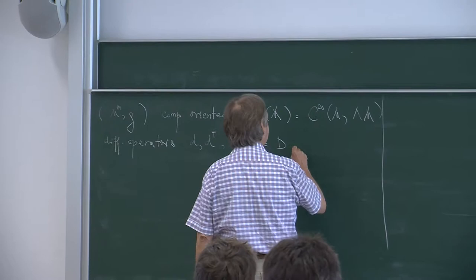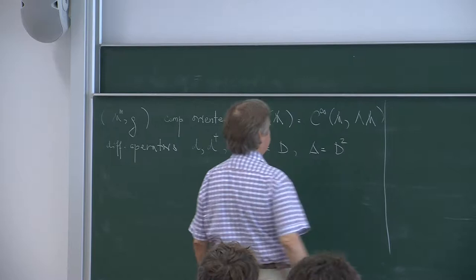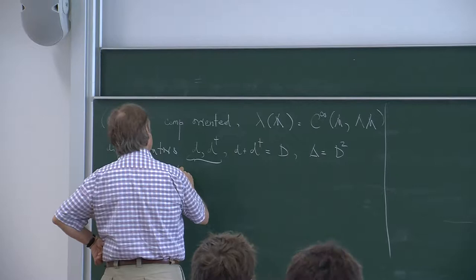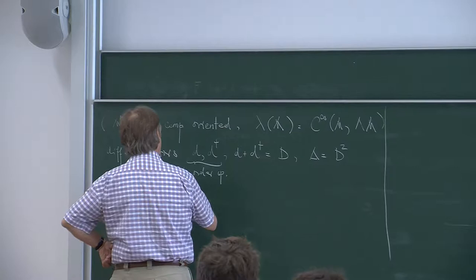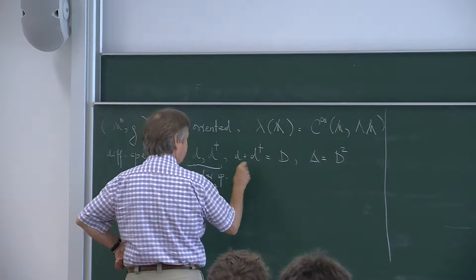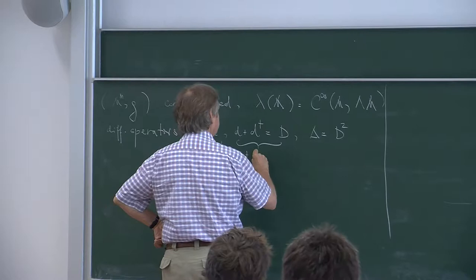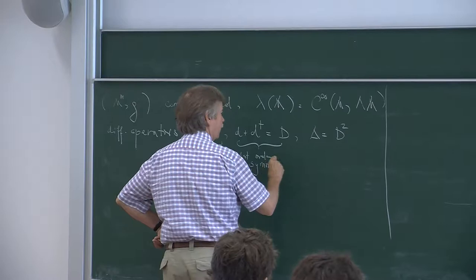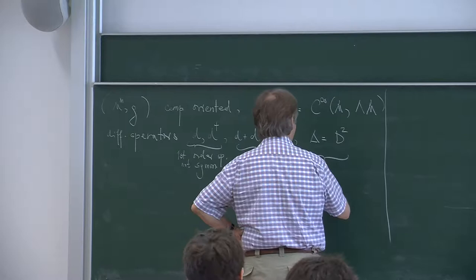It was a slightly different operator. And finally, the Laplacian. So D and D dagger are first-order operators and they are not symmetric. The de Rham–Hodge operator is first-order symmetric, and the Laplacian is second-order and symmetric.